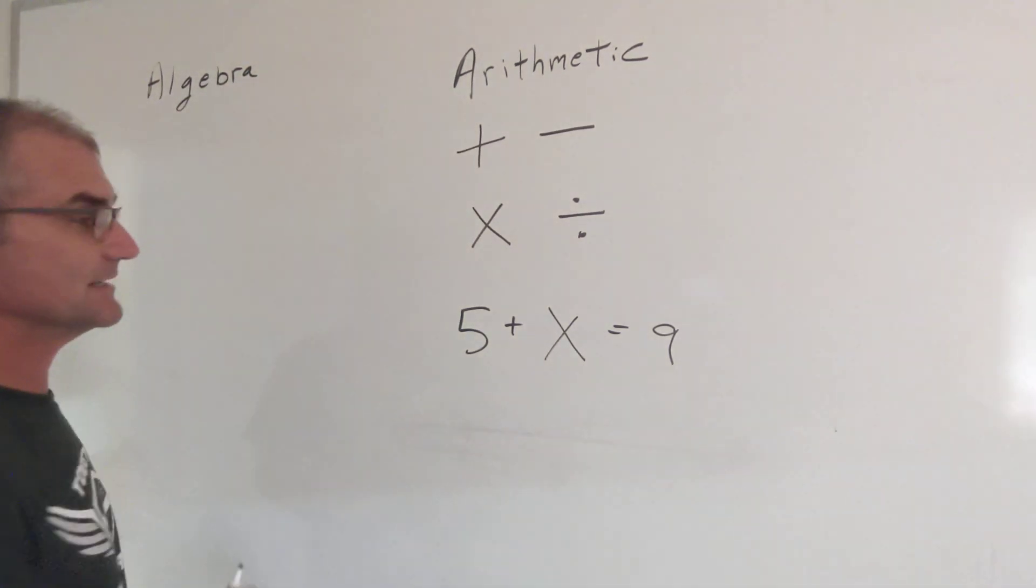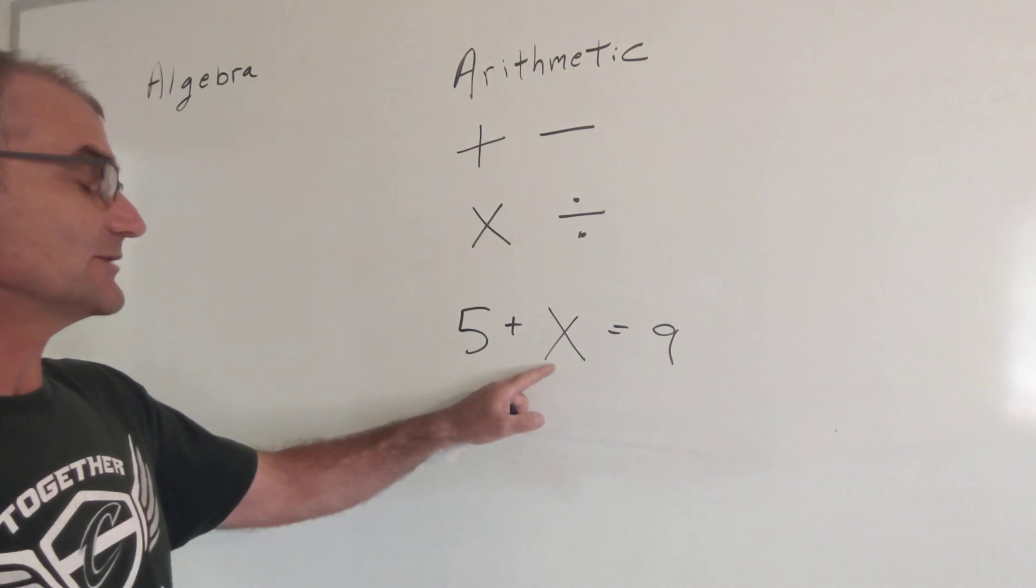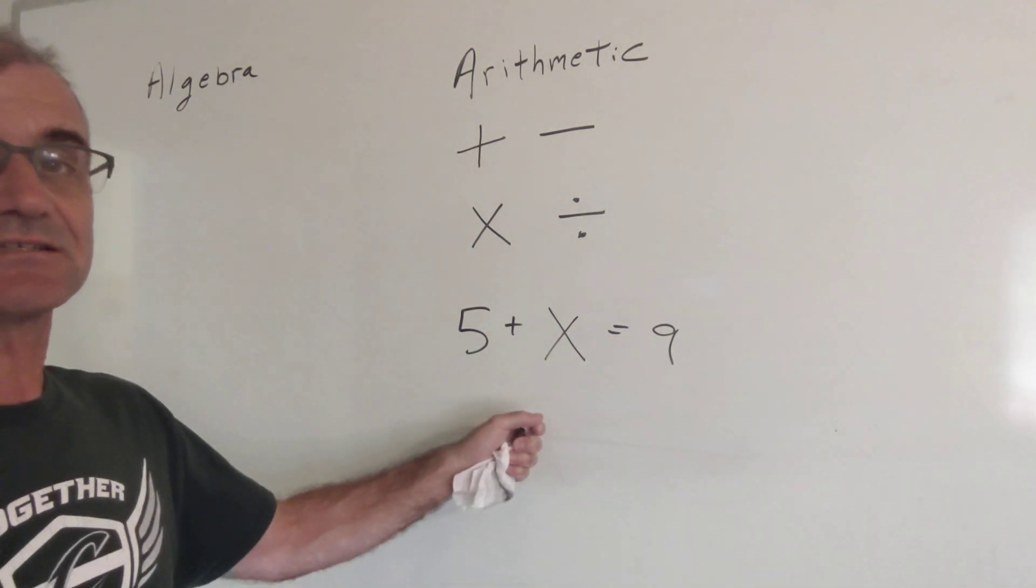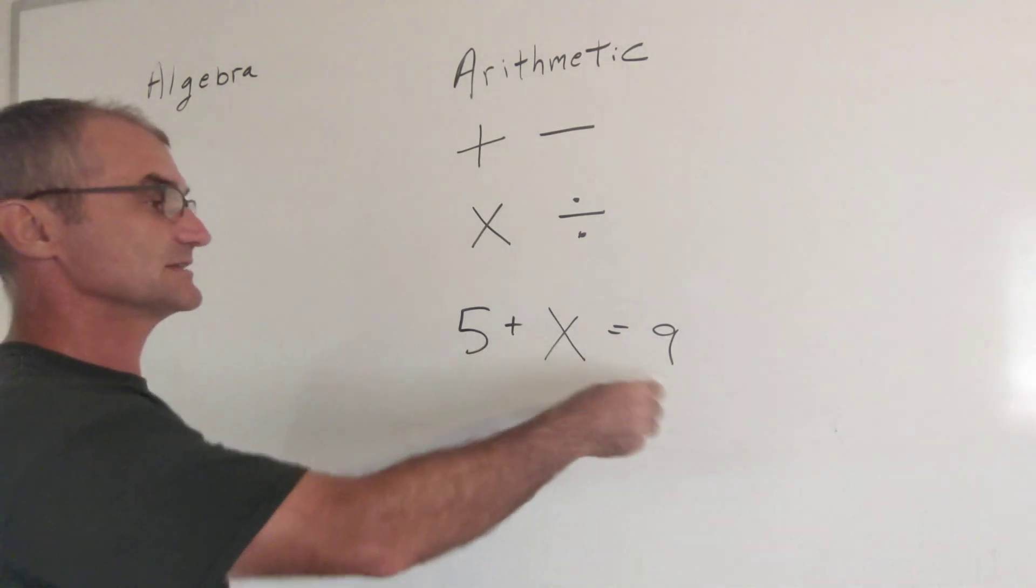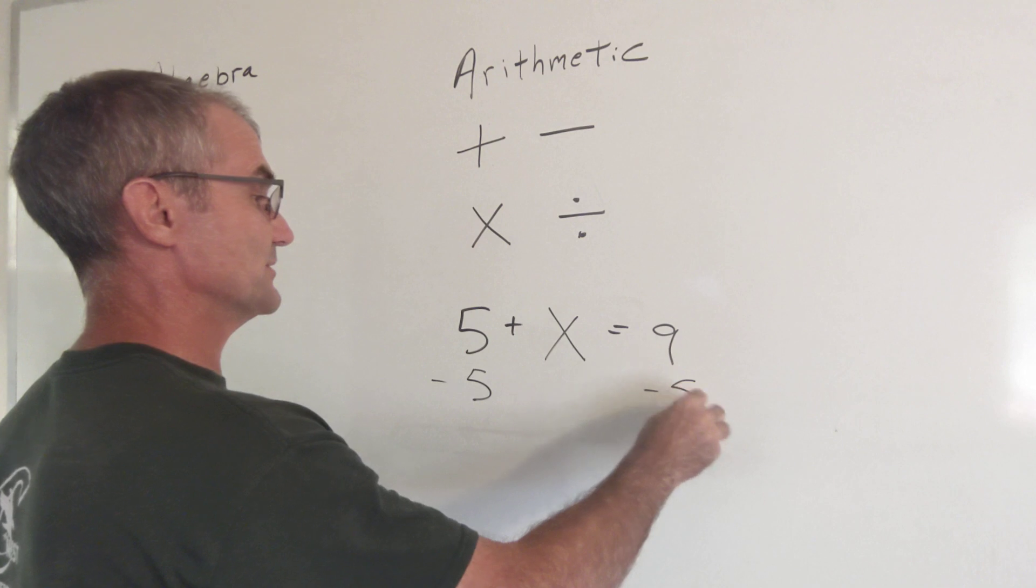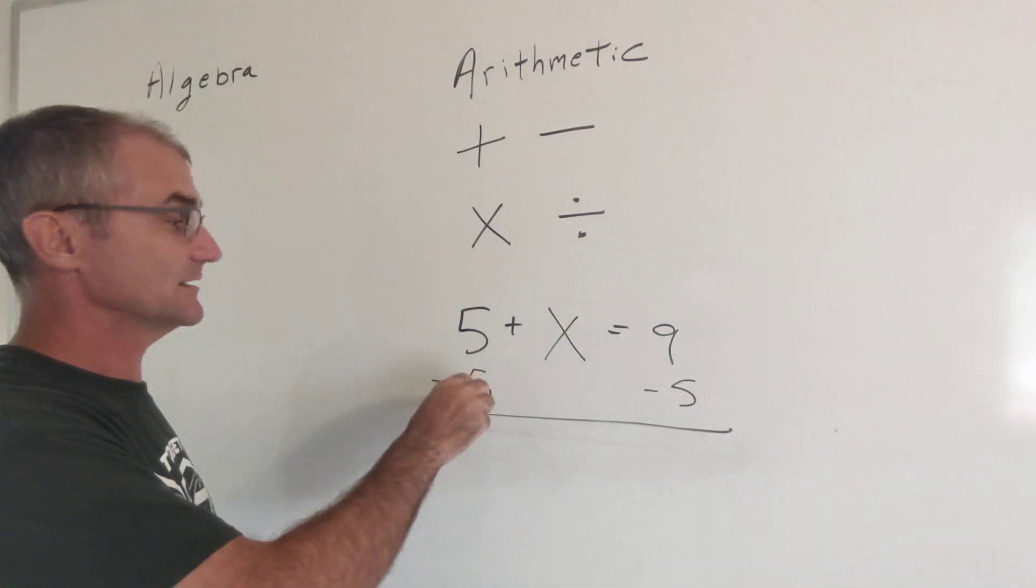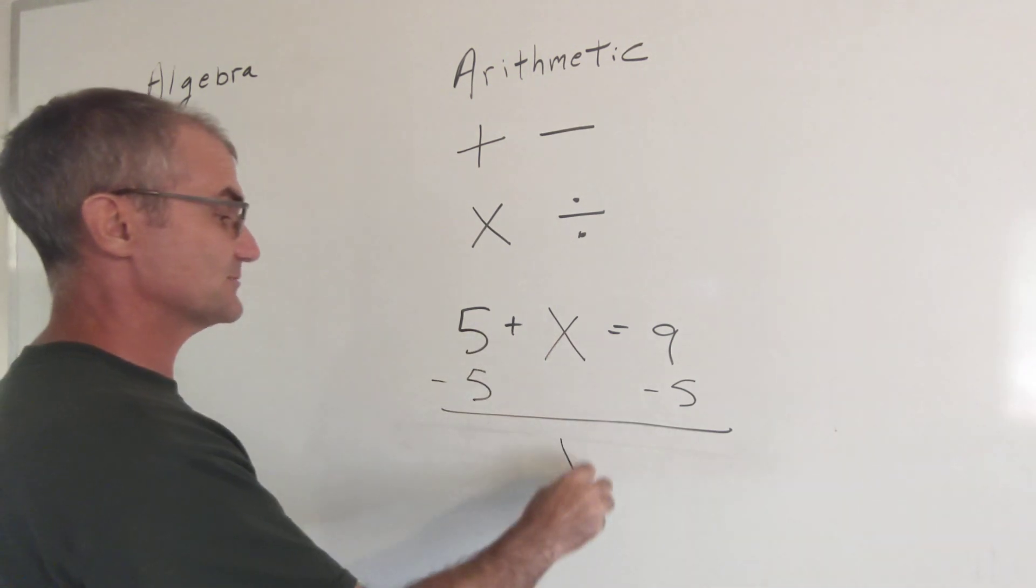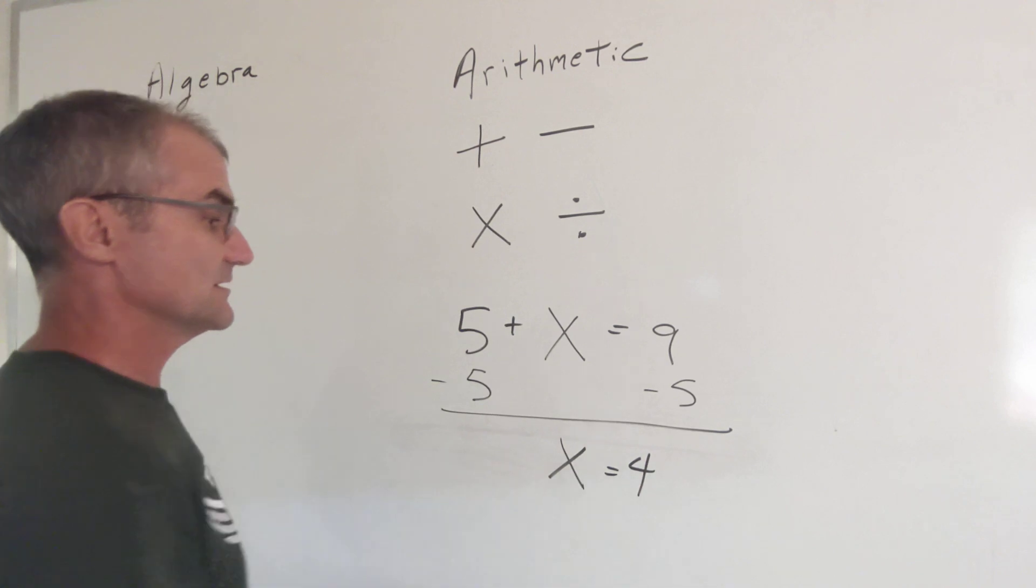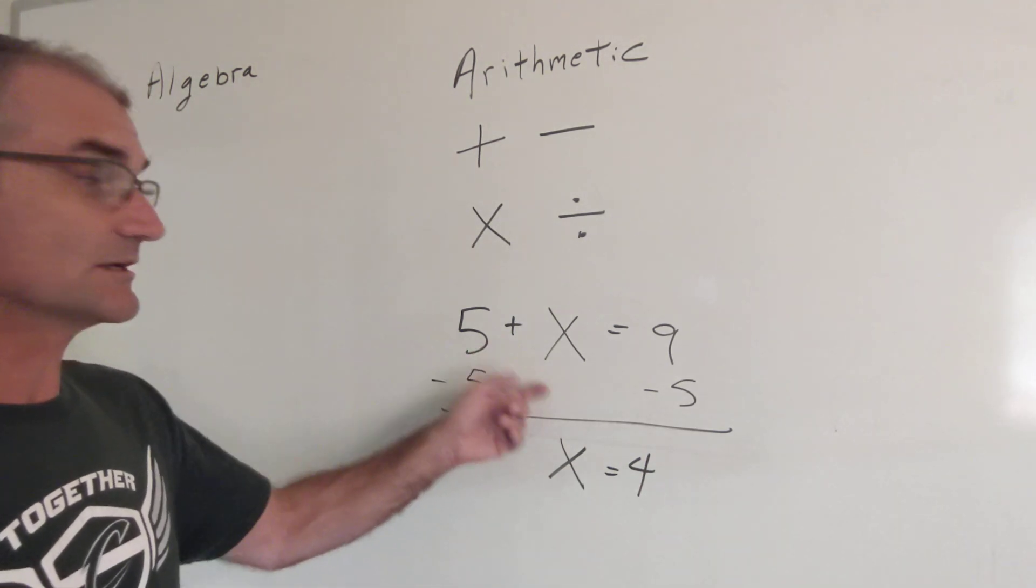So really what I want to do in algebra is isolate that variable x and then the way I do that is I just reverse the operations to get it by itself. So if I have 5 plus x equals 9, I can subtract 5 from both sides of the equation. 5 minus 5 is 0. Now I have x by itself. 9 minus 5 is equal to 4.